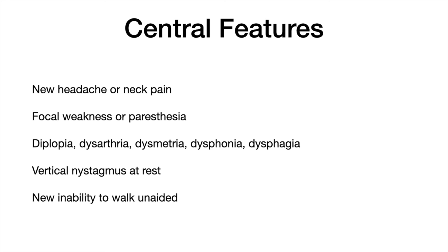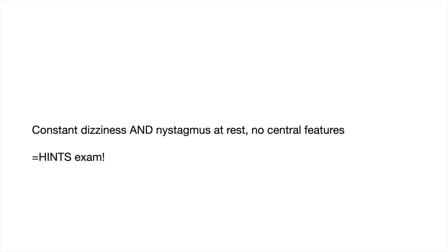If they do have central features, work them up for stroke or call a stroke code if they have obvious significant neurologic impairment beyond just being dizzy and having nystagmus. If your patient has constant dizziness, you can see horizontal nystagmus at rest, and they don't have any of the central features, it's time for the HINTS exam.